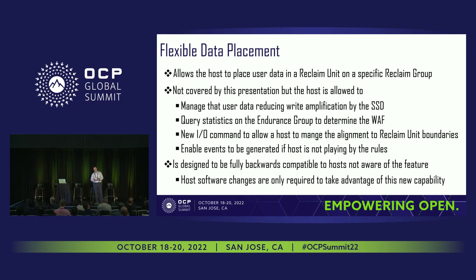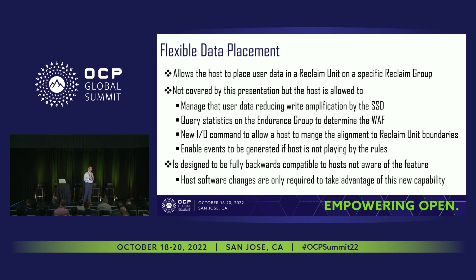We're also allowing the host to say it wants to align to new reclaim units — to go to a fresh reclaim unit to start managing at a particular point. There will be a new IO command that says: take all your reclaim units and move them to a new reclaim unit. Additionally, if a host is trying to take advantage of FDP to reduce WAF, they have to manage the rules. If they don't, the host can enable events to be generated into a log page that says a rule violation was detected. There will be a log page that can be polled to indicate a previous command violated the rules — prompting a fix to the host software to correctly manage and reduce WAF.